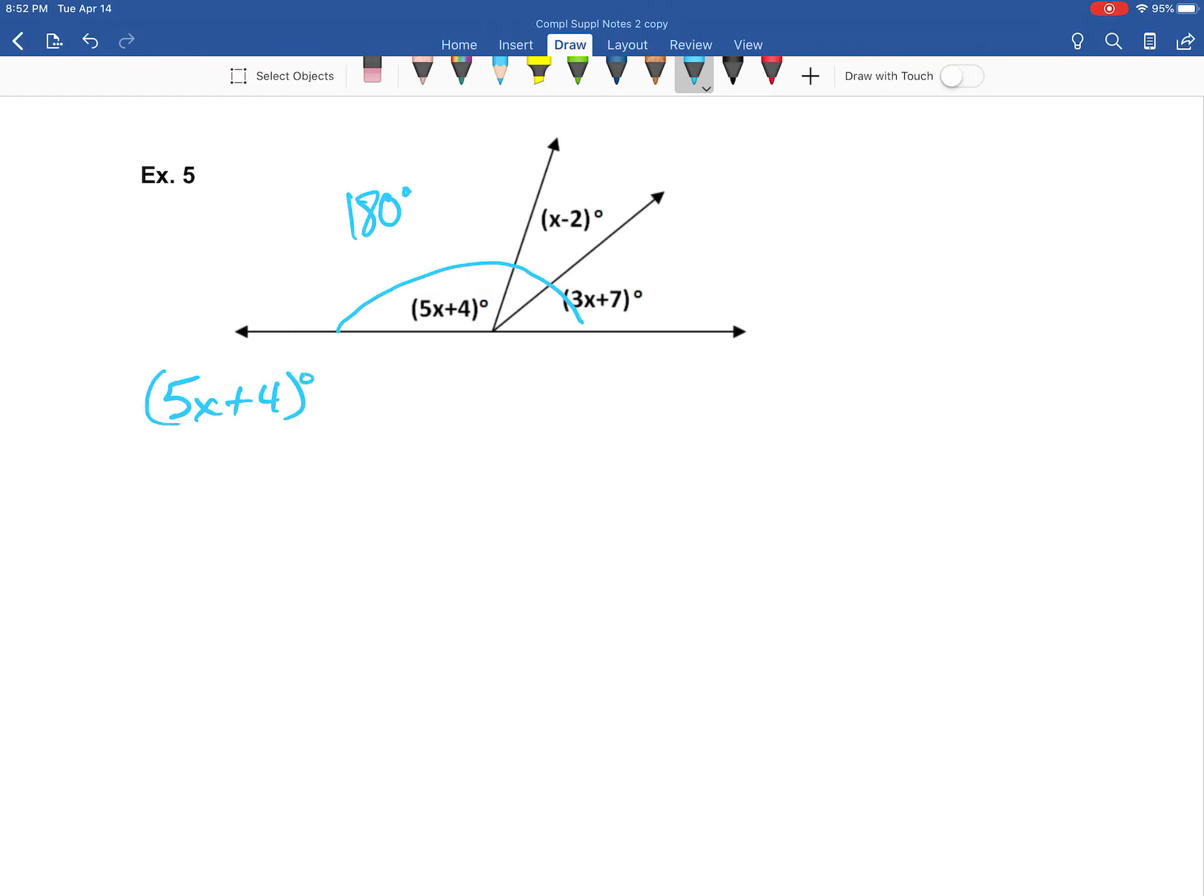And so what we're going to do is go ahead and set all of these angles, combining them together to be that 180 degrees. Since again, we're combining this angle, which is 5x plus 4, plus this angle, which is x minus 2, plus this last angle, which is 3x plus 7. All of them are being combined to give us the grand total of 180 degrees.